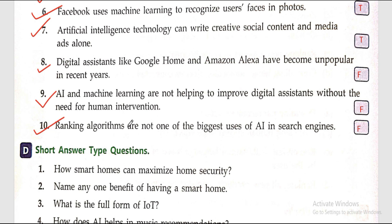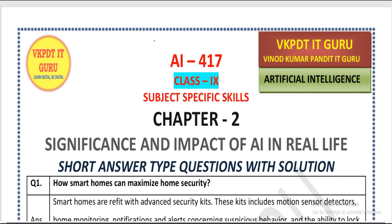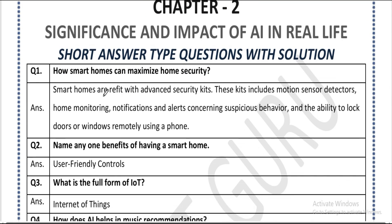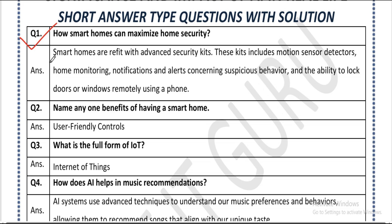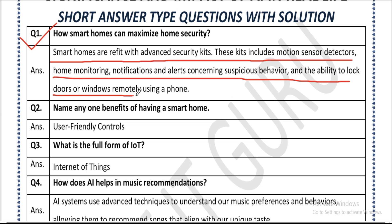Now we start question and answer. First are short answer type questions. Question one: how can smart homes maximize home security? Answer: smart homes are equipped with advanced security kits. These include motion sensor detectors, home monitoring notifications and alerts concerning suspicious behavior, and the ability to lock doors or windows remotely using a phone.